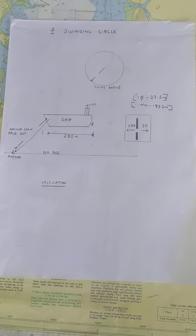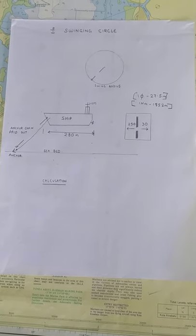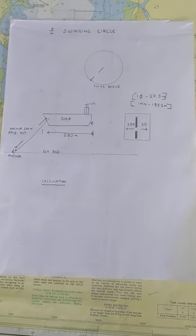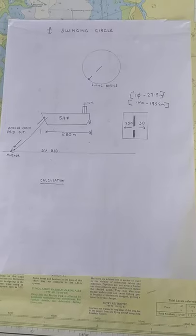We have to be aware of certain figures for calculating a swinging circle. First is one cable is 27.5 meters.